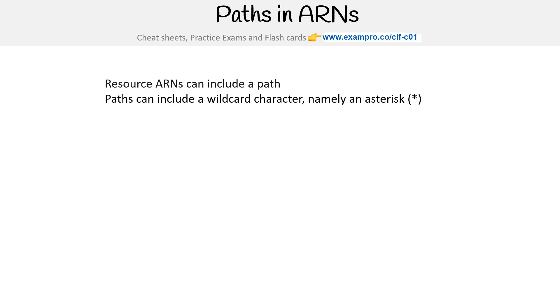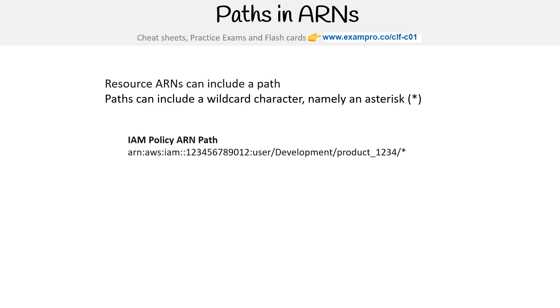For paths in ARNs, they can also include a wildcard asterisk. We'll see these with IAM policies or paths. They're really useful when you're writing policies where you need to specify an ARN but want to refer to a group of things.